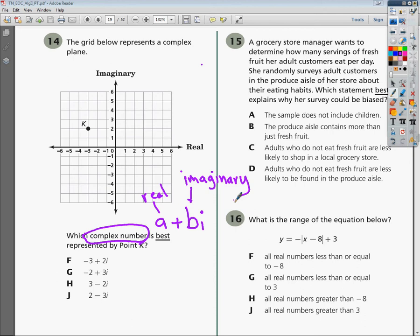Anyway, in order to set it up, we have a complex plane, which works a lot like the coordinate plane, that XY thing that you've probably seen in the past where it's X here and Y here. In this case, the X equivalent is the real axis. The Y equivalent is the imaginary axis.